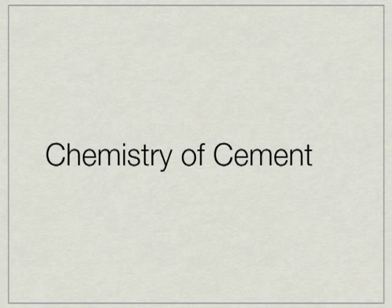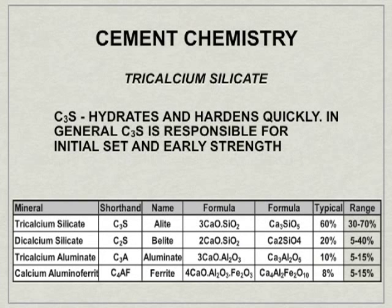We've already discussed some of the minerals of cement and how cement is manufactured. Let's talk about the chemistry of cement. There are essentially five compounds that make up over 90% of a cement. How these compounds are proportioned will determine the performance of each cement. The first compound is tricalcium silicate, annotated as C3S. C3S hydrates and hardens quickly. In general, C3S is responsible for the initial set and early strength of concrete. Tricalcium silicate can range anywhere from 30 to 70% of the cement.